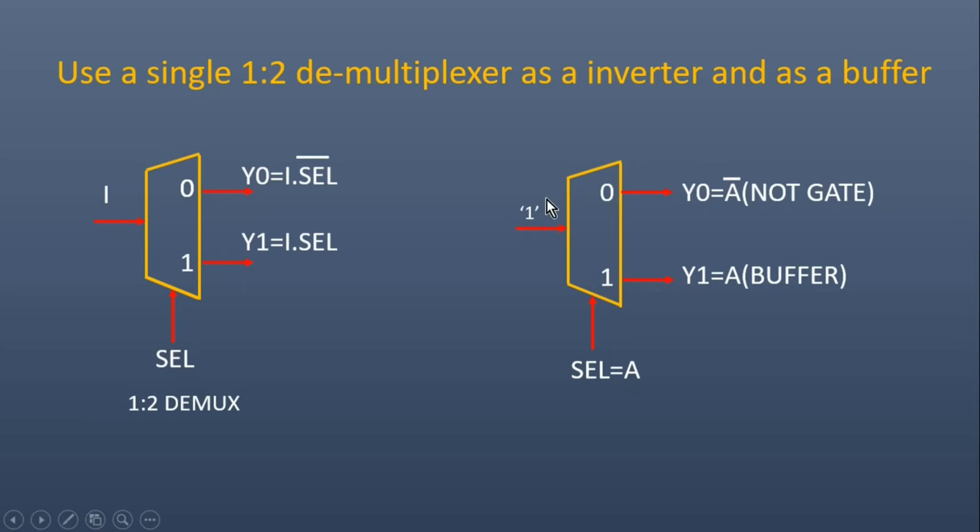If we apply logical 1 to the input and the select line as A, then let us see what will be Y0 and Y1. Y0 will be A bar because select is A and I is 1, and Y1 will be equal to A because I is 1 and select is A.